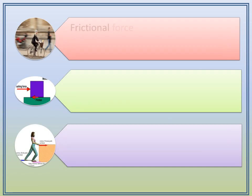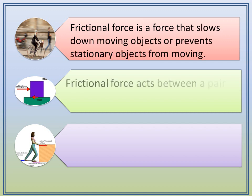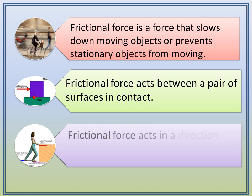To summarize, frictional force is a force that slows down moving objects or prevents stationary objects from moving. Frictional force acts between pairs of surfaces in contact. Frictional force acts in a direction opposite to the force applied.